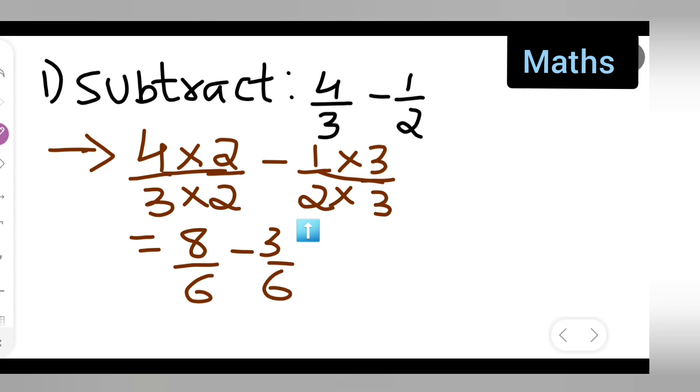2 times 3 is 6, right? So I can directly write down 8 minus 3 upon 6, because now you'll have the same denominator. The denominator is the same now, so I can directly write 8 minus 3 upon 6.